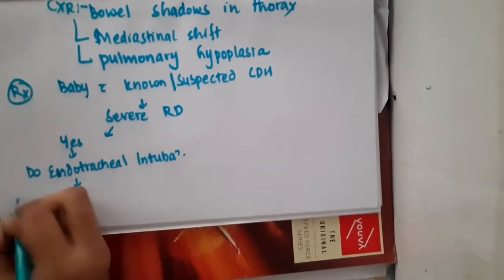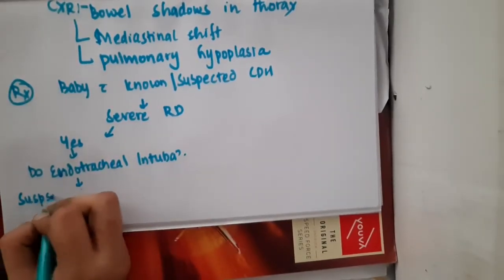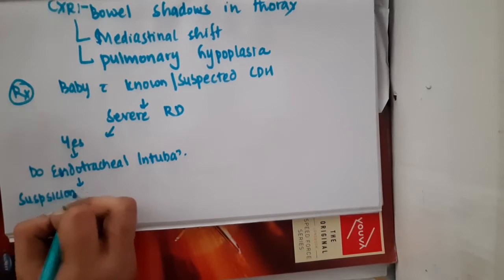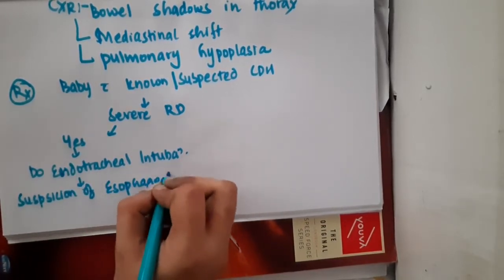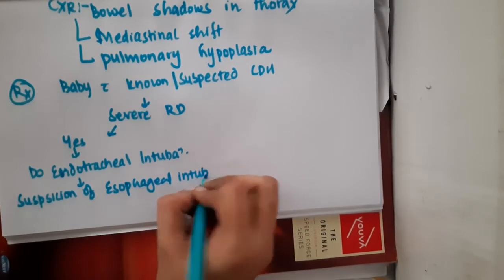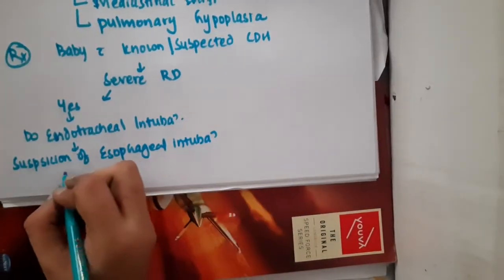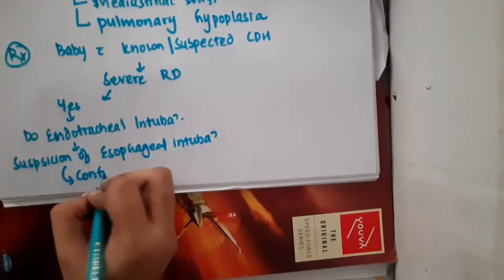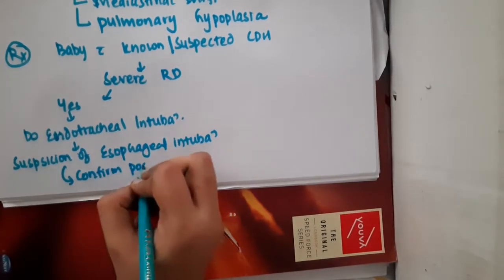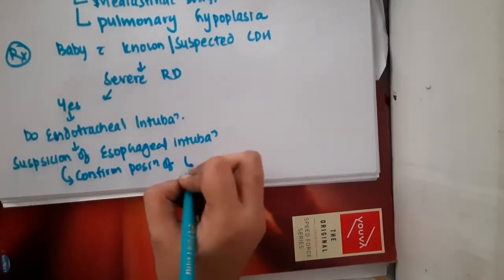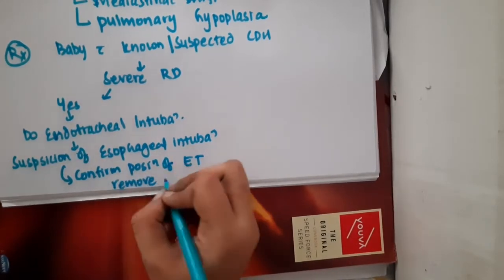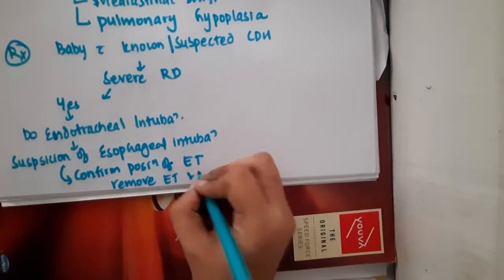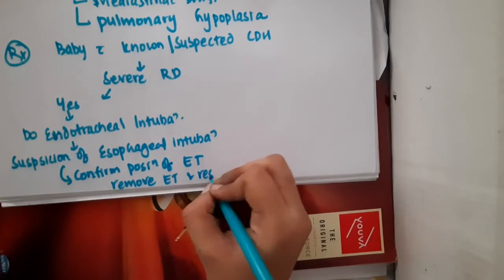If there is any suspicion of esophageal intubation instead of endotracheal intubation, first confirm the position of the endotracheal tube. If not in the right position, remove and re-intubate.